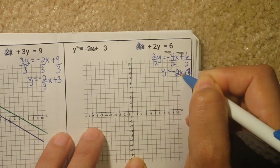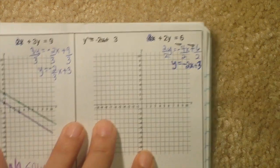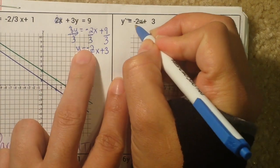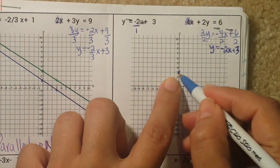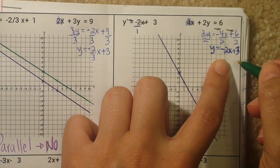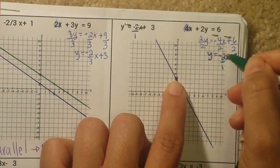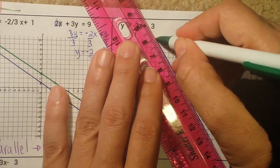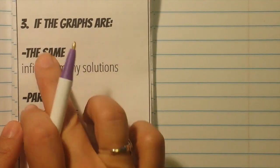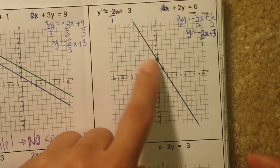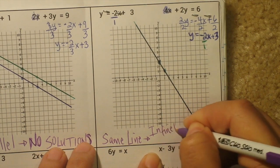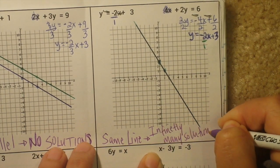Go ahead and graph both equations. Y equals negative 2x plus 3: start at 3 and go negative 2, right 1. Take your ruler or student ID card and get it as straight as possible. The second equation has the same slope and intercept — rise over run gives 3, down 1 right 1 — it's the exact same line. That means infinitely many solutions. Both equations are y equals negative 2x plus 3.